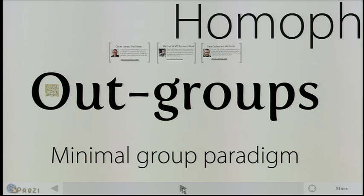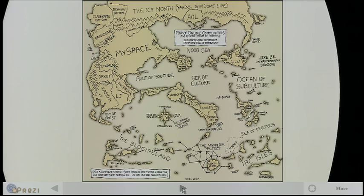The big thing I want to talk about is out-groups. It's very easy for people to decide that someone else is not like them — they're different and should be shunned. This is the minimal group paradigm, a term from Rashmi: the smallest possible difference will be magnified into an in-group and an out-group. My favorite way of thinking about this is an XKCD cartoon that draws the social web as a series of different countries — a really powerful metaphor.